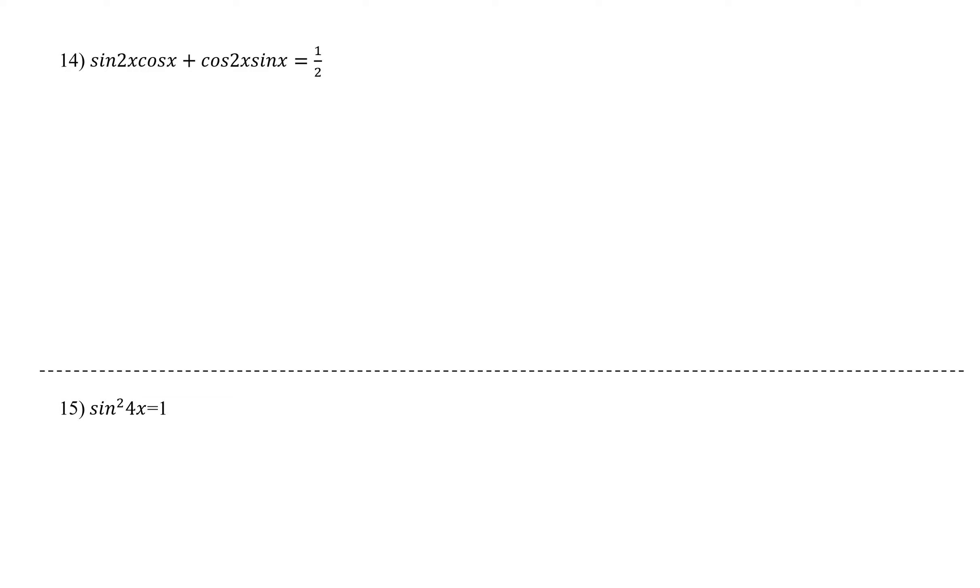This is part two of finding all angles. These are now putting everything together. We're going to be using trig identities and everything we've learned. If you look at this, your first thought is maybe let's use a double angle. But if you ever see that sine, cosine, cosine, sine, that's a sum and difference.